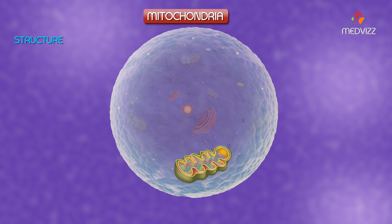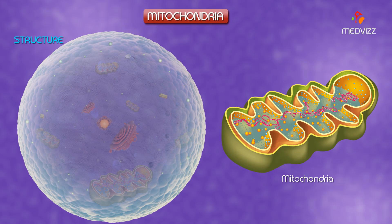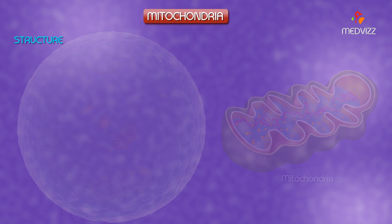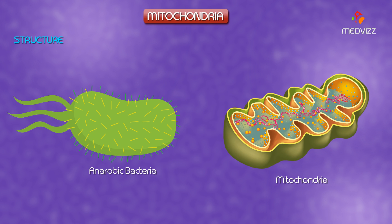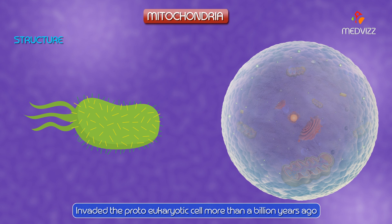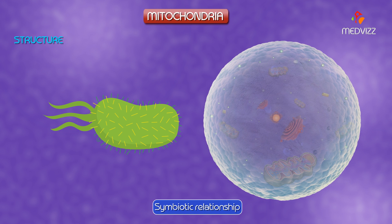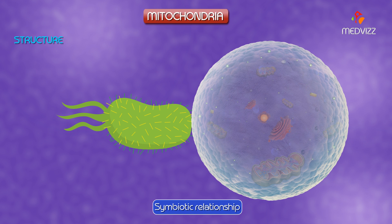Mitochondria Structure. Mitochondria are intracellular organelles found in almost all human cells. Mitochondria are thought to be derived from the aerobic bacteria that invaded the proto-eukaryotic cell more than a billion years ago and lived in a symbiotic relationship with it, exchanging energy in the form of adenosine triphosphate for residence.